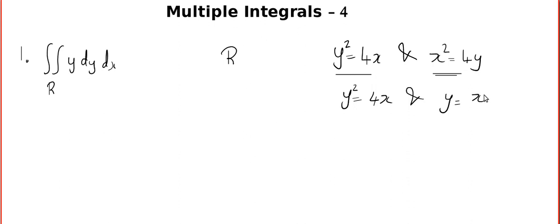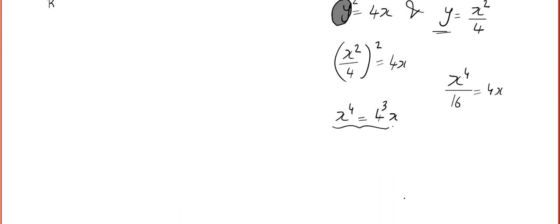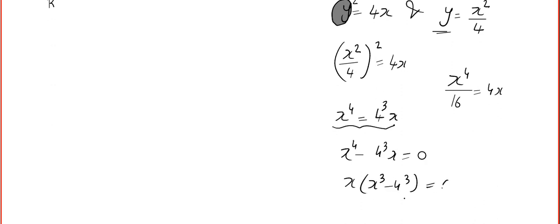From the second equation, y = x²/4. Plugging this into the first equation: (x²/4)² = 4x, giving x⁴/16 = 4x, so x⁴ = 64x. Taking everything to the left-hand side, we get x(x³ − 4³) = 0, so x = 0 or x = 4.